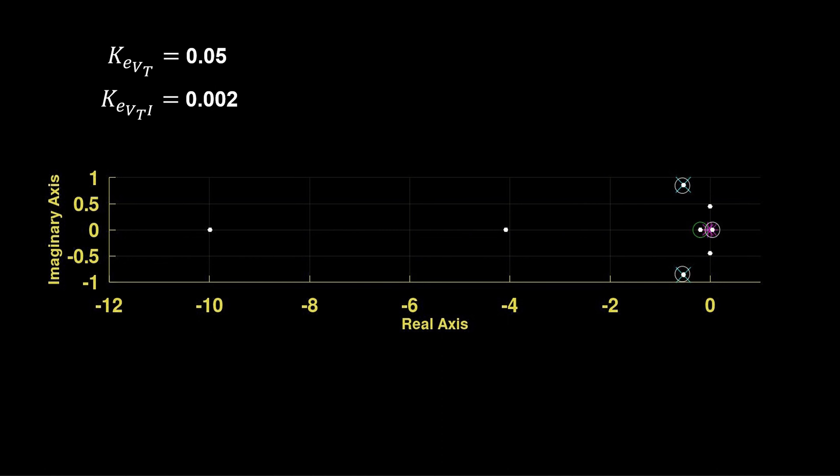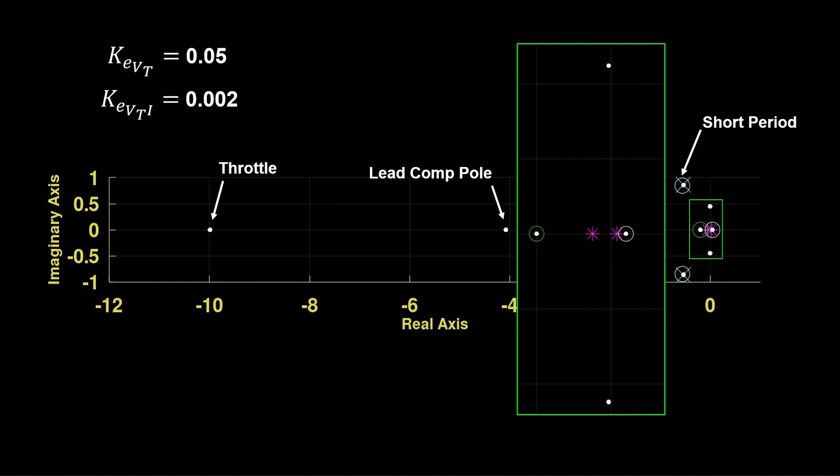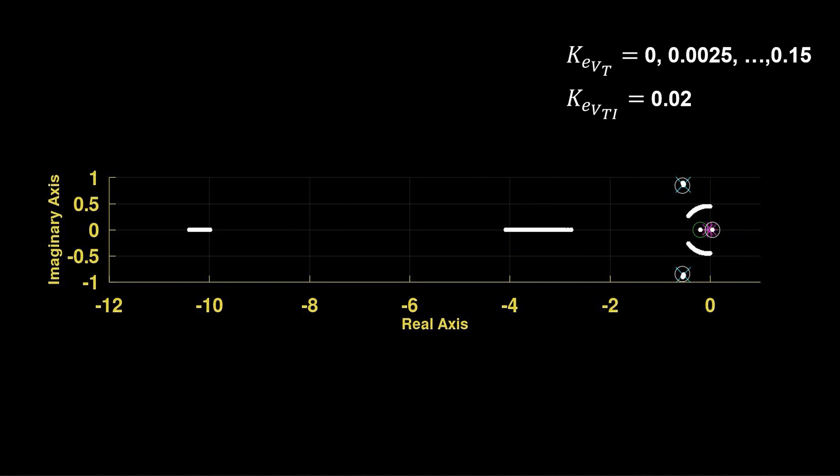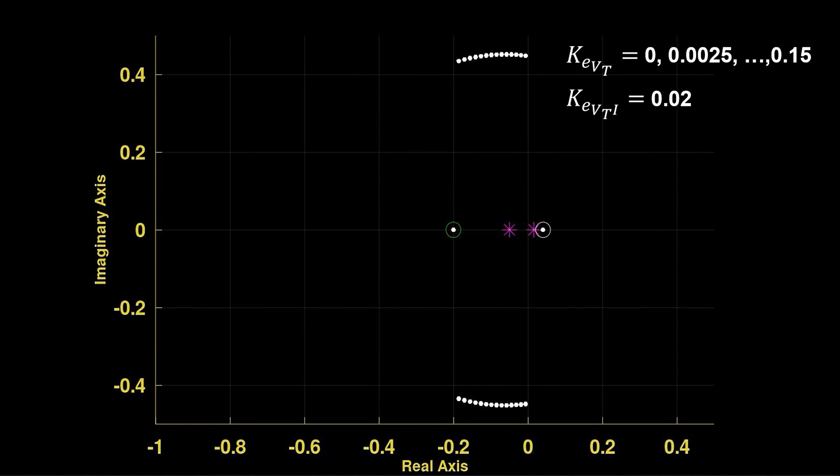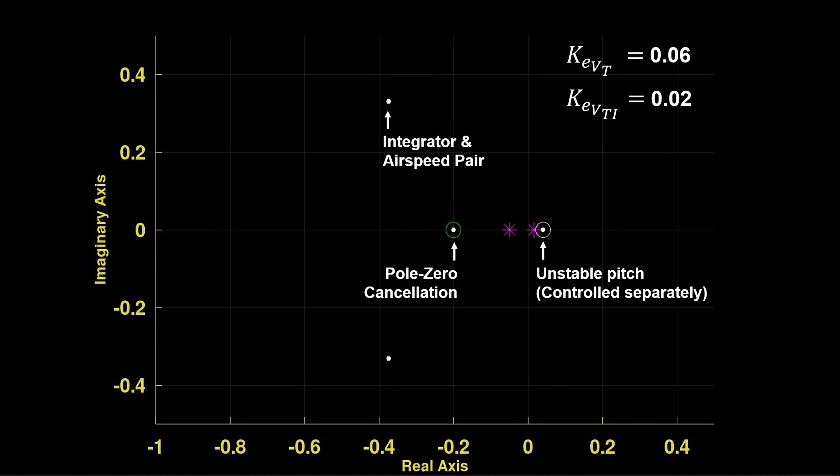Now back to the pole zero plot with the lead compensator. We have the throttle at minus 10. The lead compensator pole near minus 4. The short period. And near the origin cancellation of the engine pole with the lead compensator zero. Unstable pitch angle pole and the integrator and airspeed pair now stable. But with the lead compensator in general, larger integral air gain is possible while avoiding instability. The same with the proportional loop closer to the origin. The lead compensator allows us to tune to larger gains for higher performance.